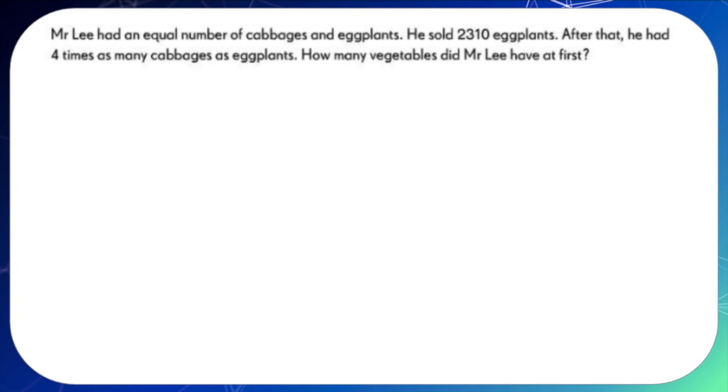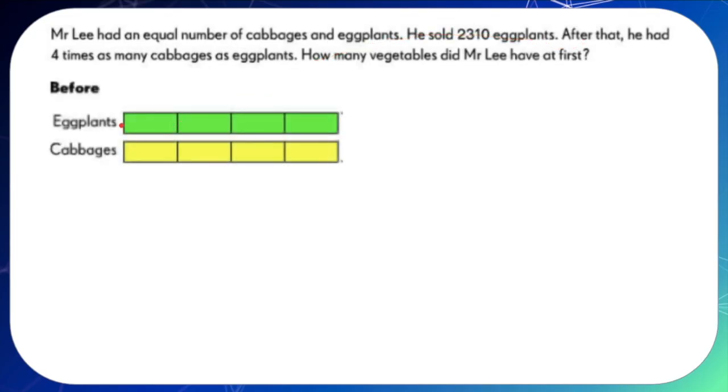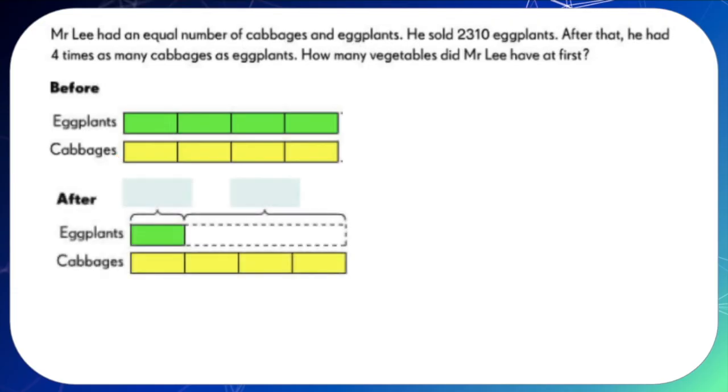First, let's try representing the number of vegetables that Mr. Lee had at first. We have the eggplants and the cabbages and it shows in the model that they are equal in number. Then after a while, Mr. Lee sold 2,310 eggplants and this can be represented by the broken line here. So, the number of eggplants that were sold was 2,310. And now, the green part here or the one unit is actually the number of eggplants that were left.